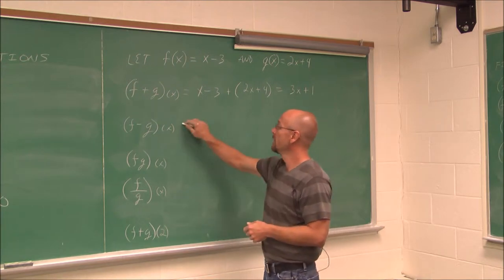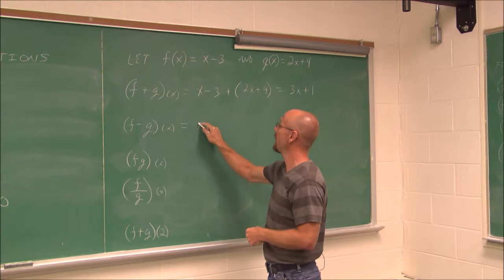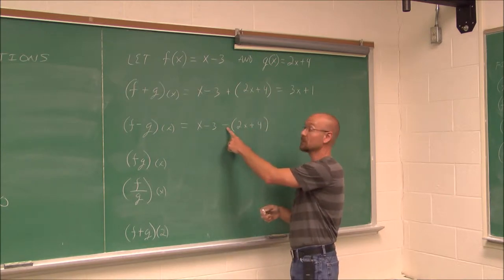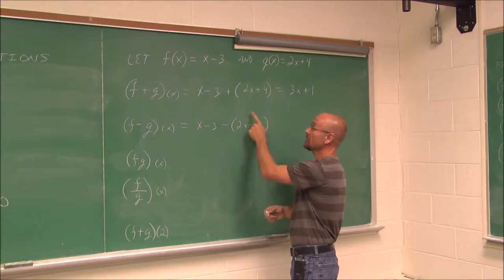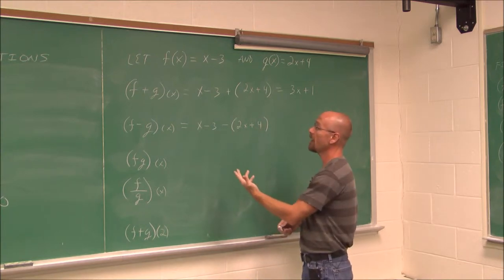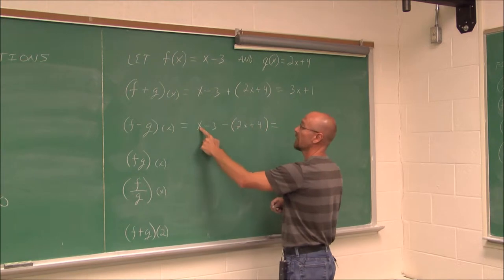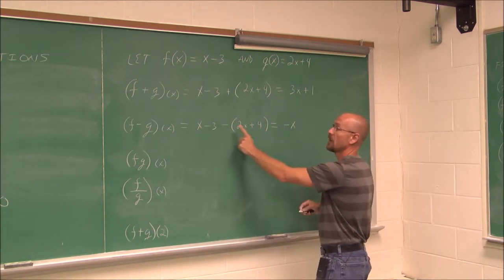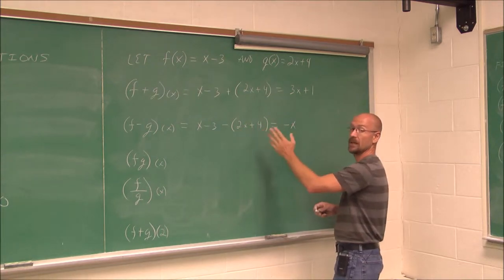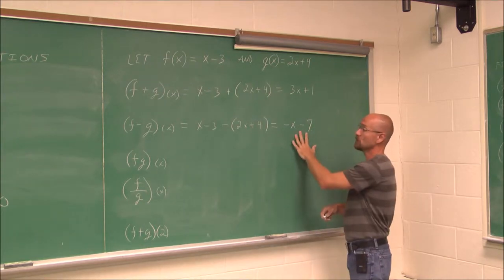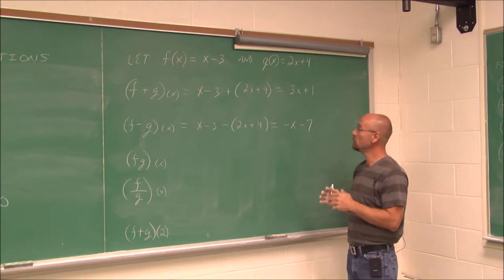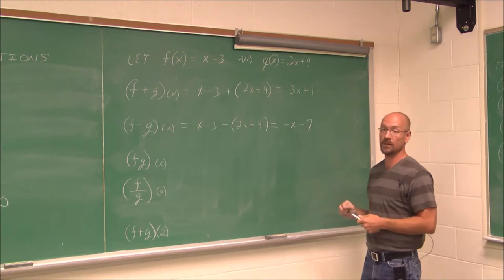Let's look at f minus g of x. I take f of x and subtract g of x. I put in parentheses because with subtraction these are essential — I'm subtracting the entire function, so I have to distribute the negative to each term. x minus 2x gives me negative x. Negative 3 minus positive 4 gives me negative 7. Make sure you don't make a sign error when it's subtraction. So we have this new function: negative x minus 7.